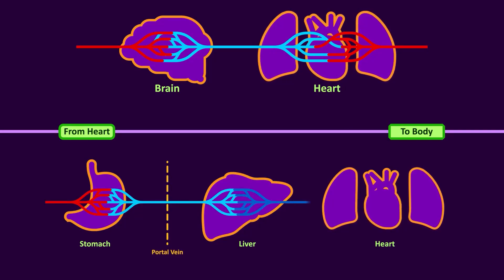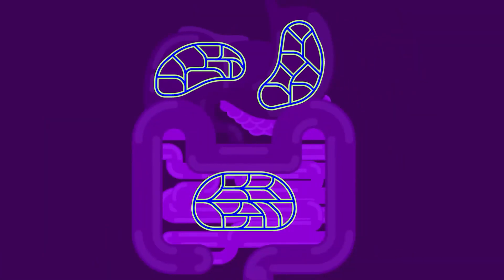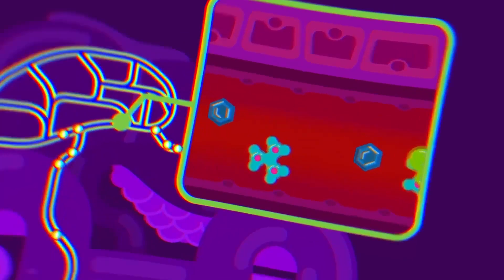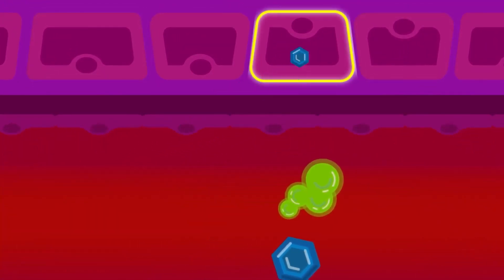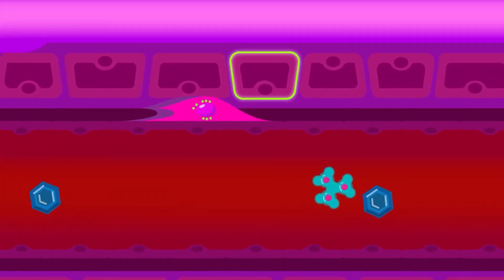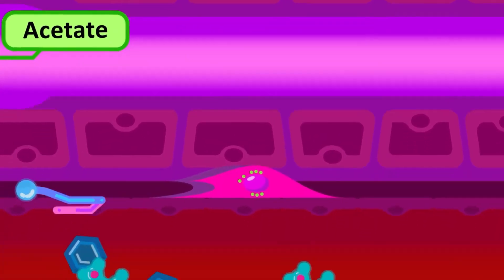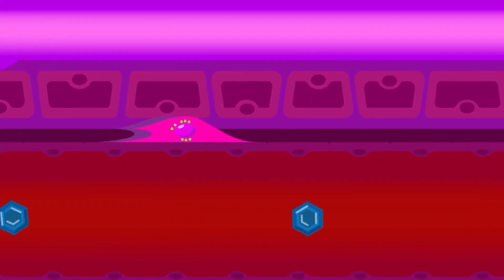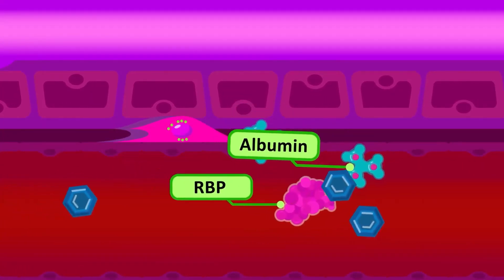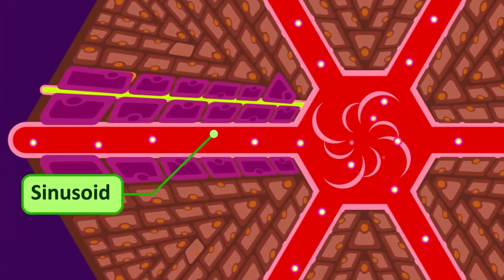The portal venous system enables blood from one set of capillary beds to be drained into another set of capillary beds without first returning to the heart. The hepatic portal system links the capillary bed of the gastrointestinal tract with the capillary bed of the liver. Blood rich in nutrients is first brought to the liver for processing, where amino acids and monosaccharides are either stored or used to make new proteins and carbohydrates. The liver also filters toxins absorbed with food and removes vitamins and cofactors from the blood for storage.